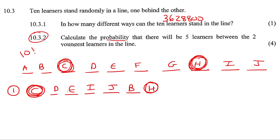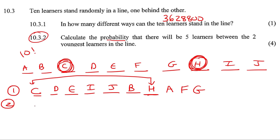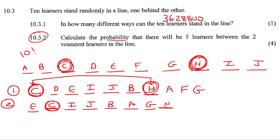Then H would have to come next because they want exactly five people in between them, and then we still have A and G remaining — that's one scenario. The second scenario is that it could have been C or H in that first position — it doesn't really matter. The next one is that we start off with someone random like E, then put C or H in the next position, and then you would need another five people between them, and then H or C would follow.